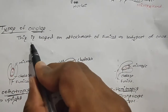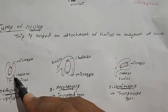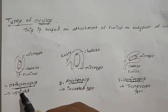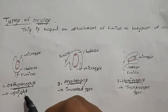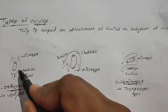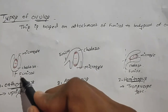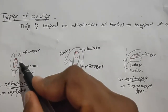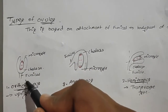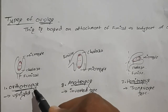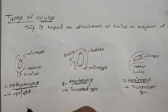Types of ovules. This classification is based on the attachment of the funicle to the body part of the ovule. The first type is orthotropous, which is the upright type. In this type, the micropyle end is towards the upper side and the chalaza end is towards the lower side, and the micropyle, funicle, and chalaza are all present in the same plane. This type is most common in gymnosperms.